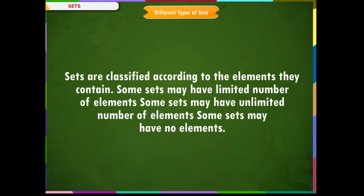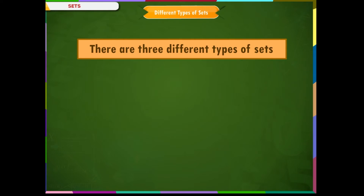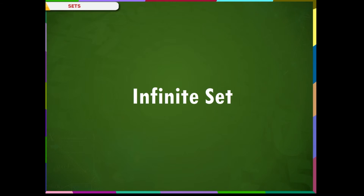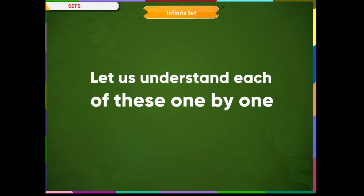Different types of sets. Sets are classified according to the elements they contain. Some sets may have a limited number of elements. Some sets may have an unlimited number of elements. Some sets may have no elements. There are three different types of sets. Let us understand each of these one by one.